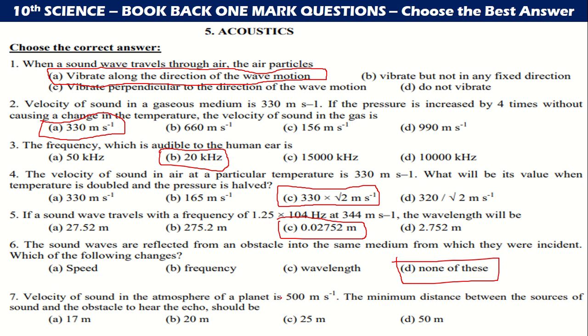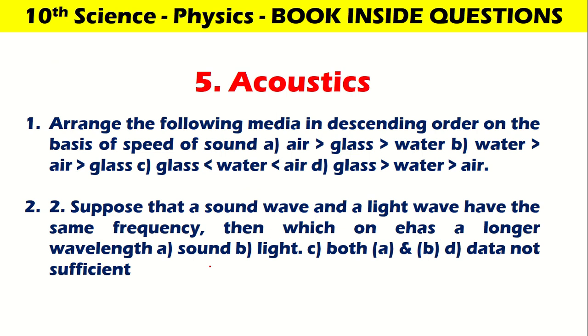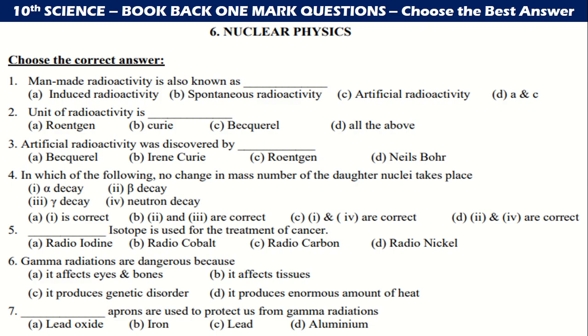Velocity of sound in the atmosphere of a planet is 500 m/s. The minimum distance between the sources of sound and the obstacle to hear the echo should be 25 meter. Arrange the following medium in order: glass, water and air. Suppose the sound and light have the frequency, then which one has longer wavelength? Light is the answer.